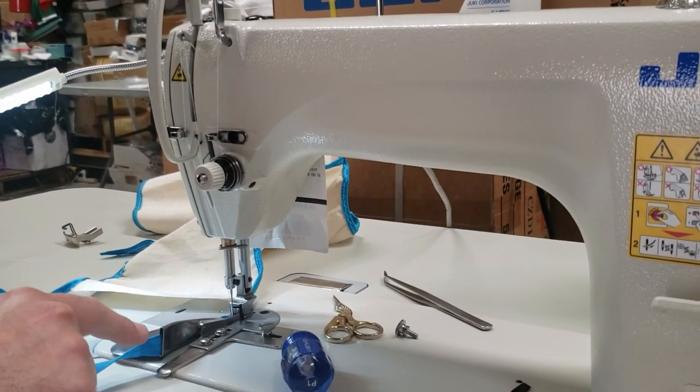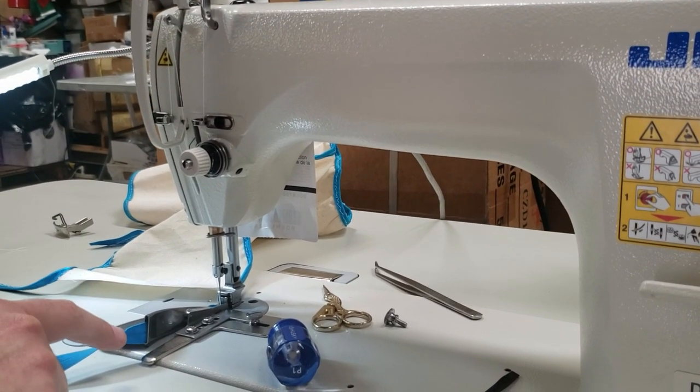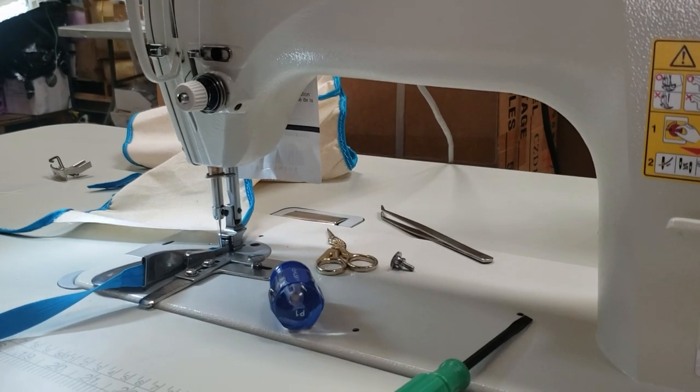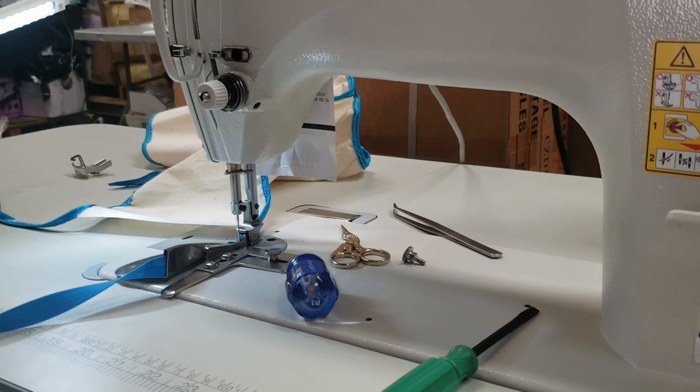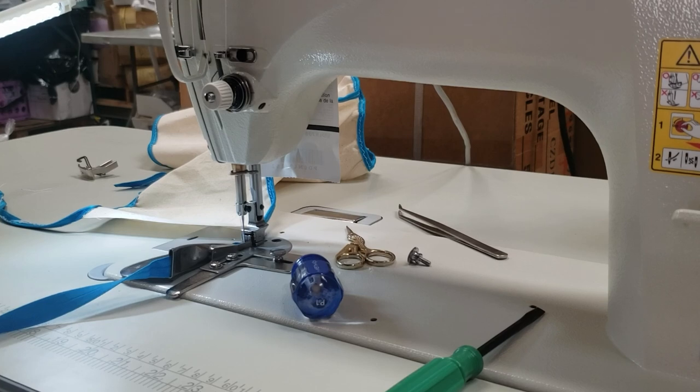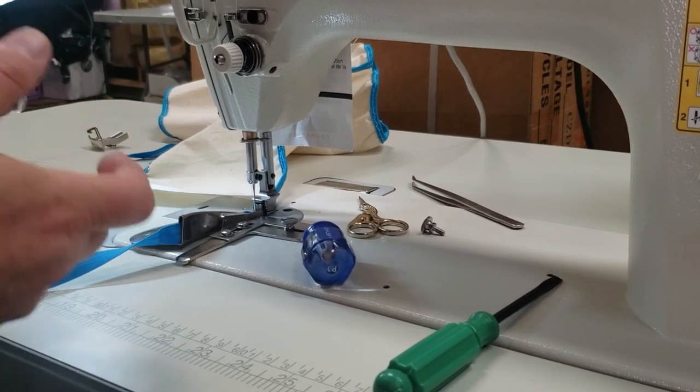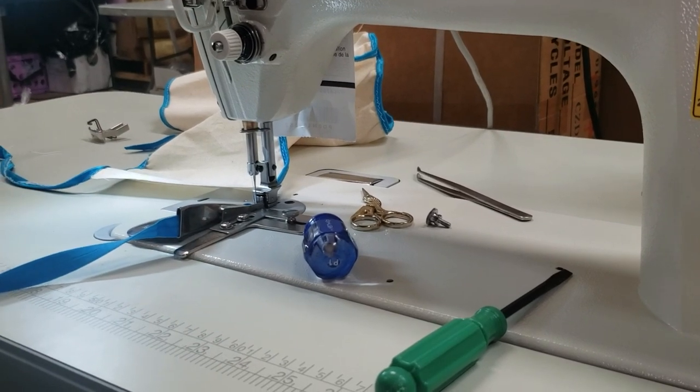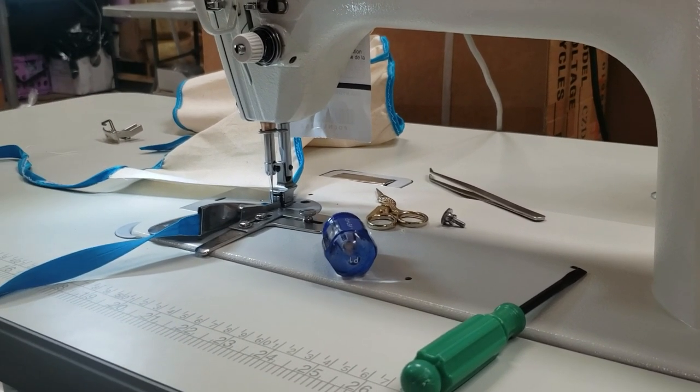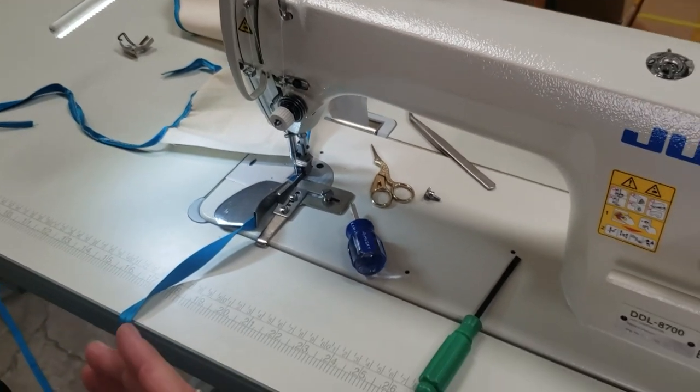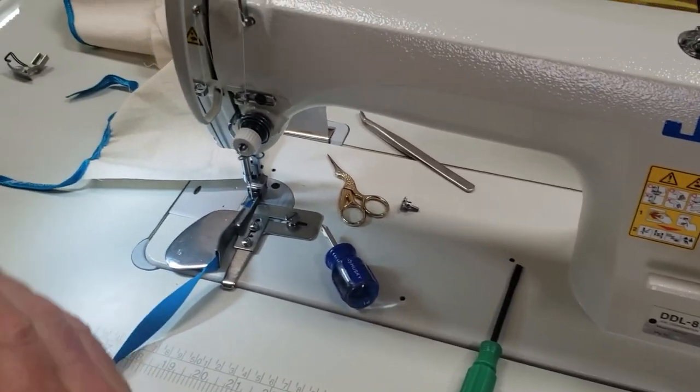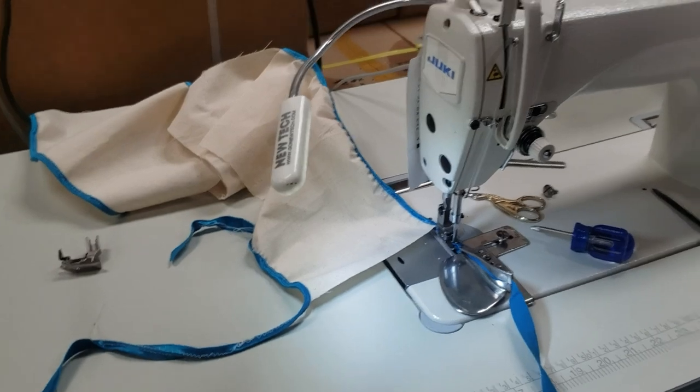This is a single fold binder attachment called 100 LS. It's on our website. It comes in different sizes for folding binder, binding bias or tapes. It comes from size three-quarter or from half all the way up to two inch.